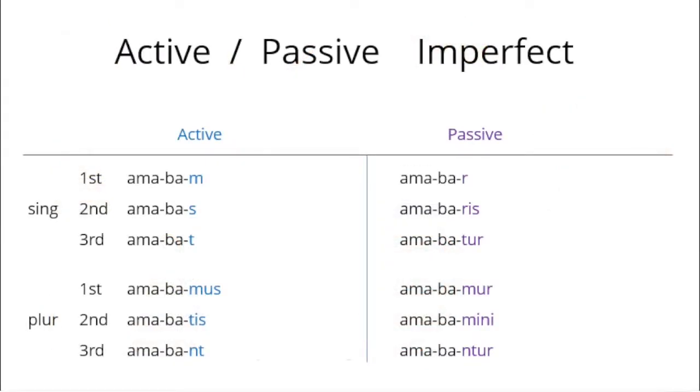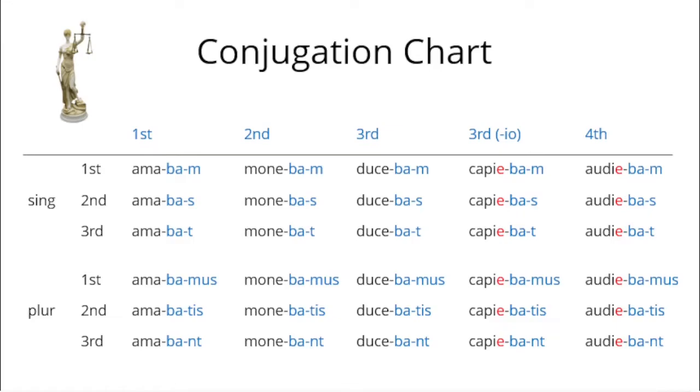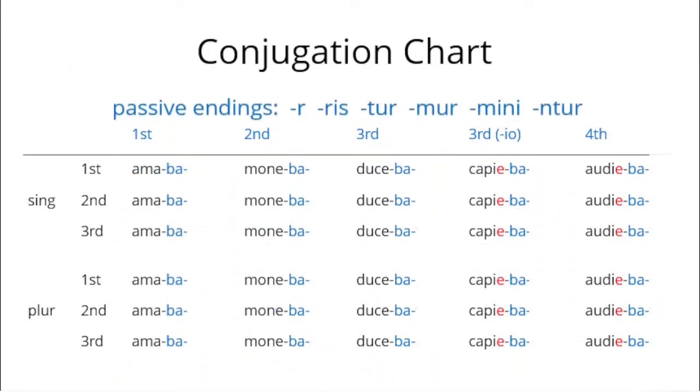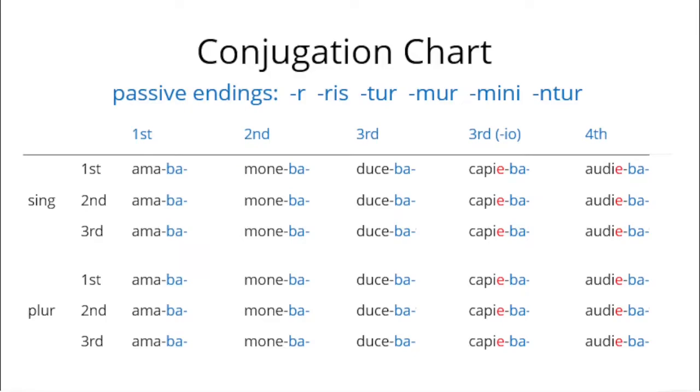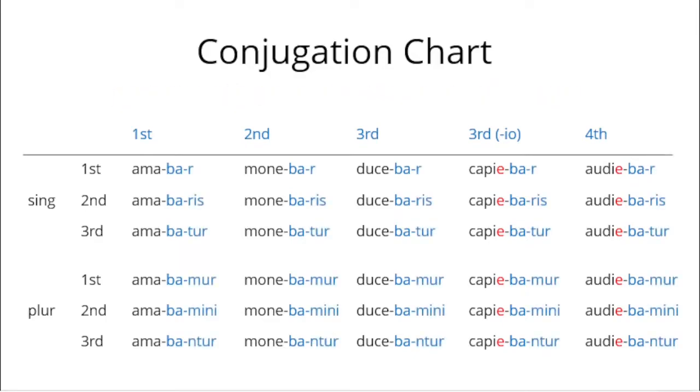Let's go on with our imperfect passive. We remember to get the passive form, we start with the active form, cut the ending away and add the passive ending. This works with every Latin conjugation. We cut the active ending away. We add the passive endings. So we have the imperfect passive forms.